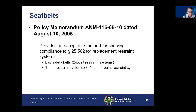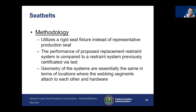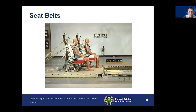Many times you don't have enough original belt data or test articles to conduct a full test. There's another policy memorandum released in 2005 that describes a component level test on a rigid seat for replacing seat belts in 25.562-compliant systems, covering both lap safety belts and torso restraint systems. The method uses a rigid fixed seat instead of the representative production seat. The performance of the proposed replacement restraint system is compared to the restraint system previously certified via test, with the geometry of the systems essentially the same in terms of webbing segment attachment locations.